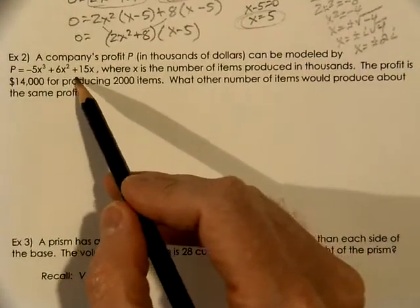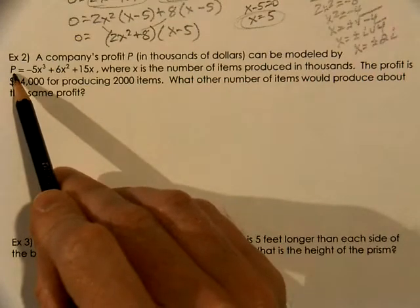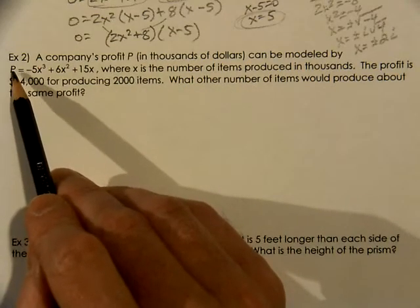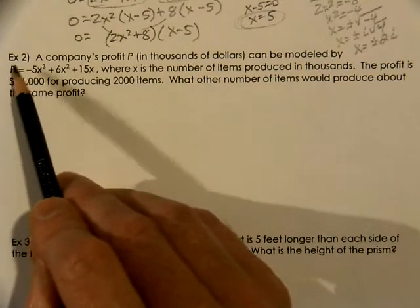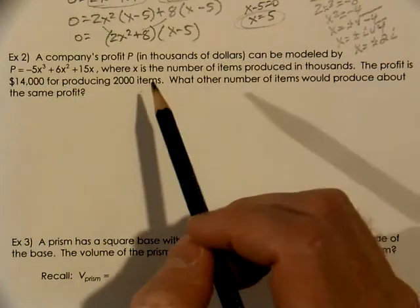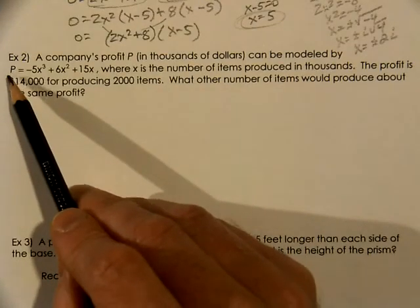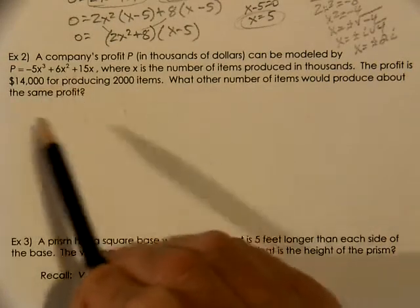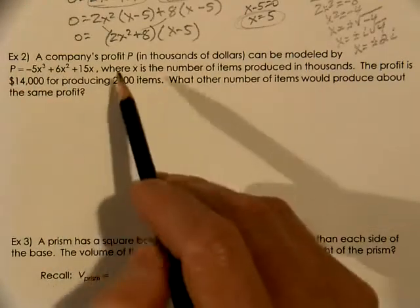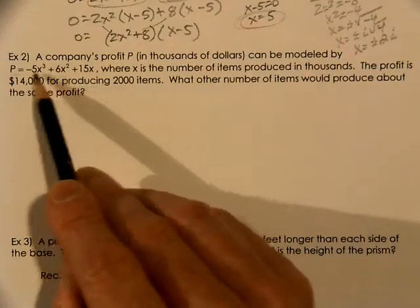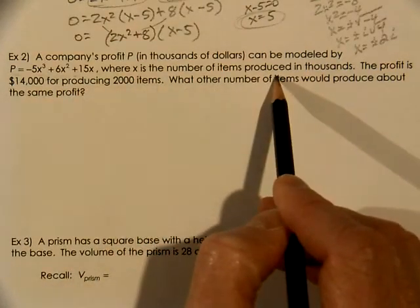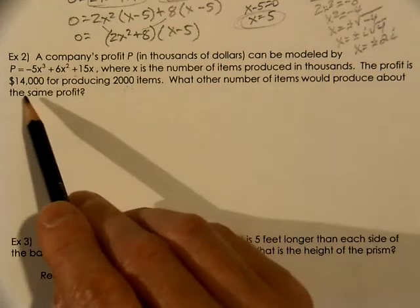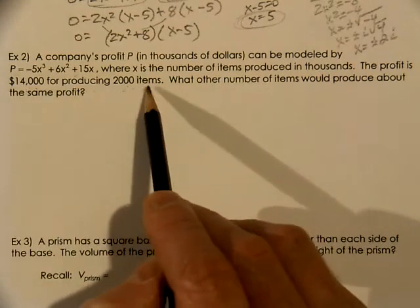Now we're going to talk about a company and its profit. The value of P is a number, and that number stands for thousands. So if we get a number of 3, then that's going to be 3,000. If we have a number for P to be 28, then that's 28,000. Even better, if we get an answer of 0.5, then that is 500. This is our profit equation, where x is a number of items. So here they're telling us a lot of information right here. The profit is $14,000 when we produce 2,000 items.